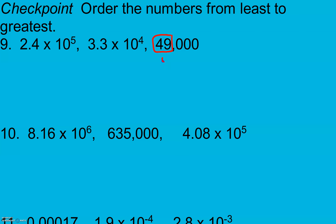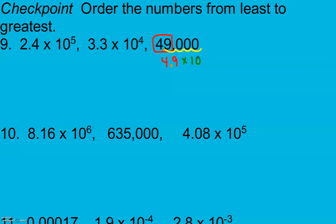I get just my important digits — my non-zero digits — with exactly one number in front of my decimal. Then I look at how many places I have to move to get back to where we started: 1, 2, 3, 4. So I multiply times 10 to the 4th power.